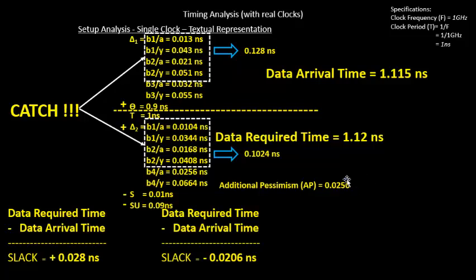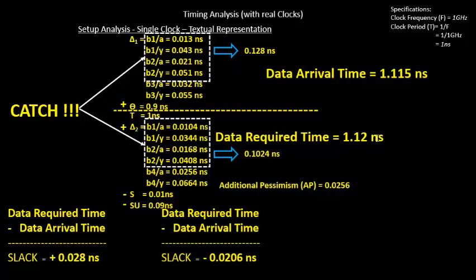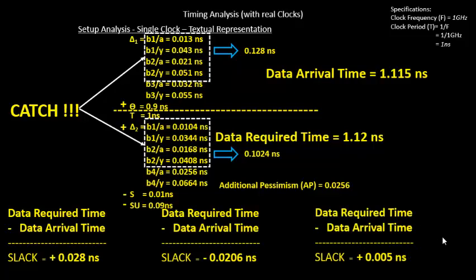We could also have subtracted the pessimism from the data arrival time — either approach works. So in the setup timing analysis, adding 25.6 ps to the data required time gives a new required time of 1.12 ns. When you calculate the slack with this corrected data required time, the slack appears positive and we are in safe hands. This additional pessimism parameter is called AP, and it is very important for removing pessimistic calculations from your slack.